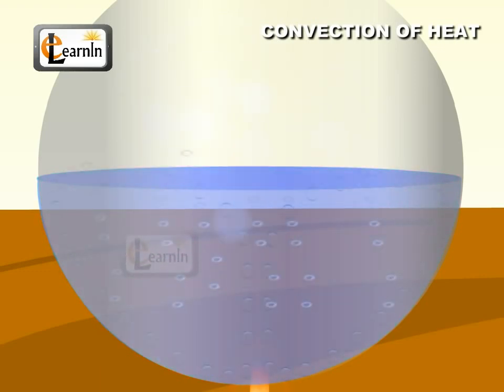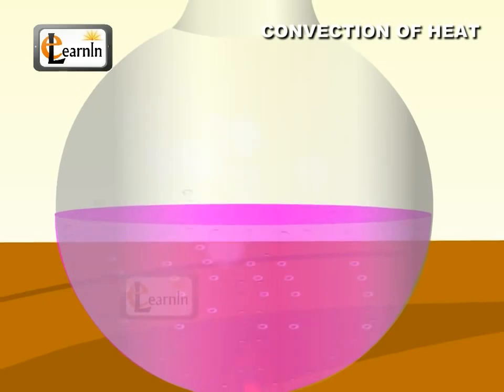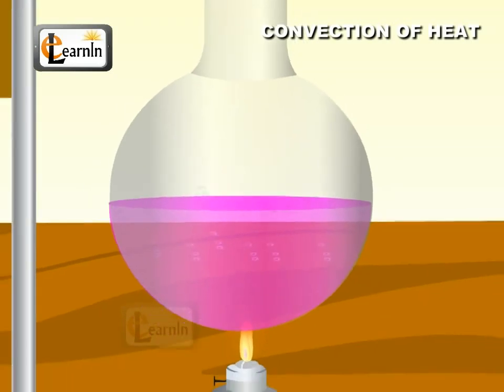The water at the bottom gets heated and expands. The density of water becomes less because of this expansion. Therefore, water becomes light and goes up to the top of the flask.